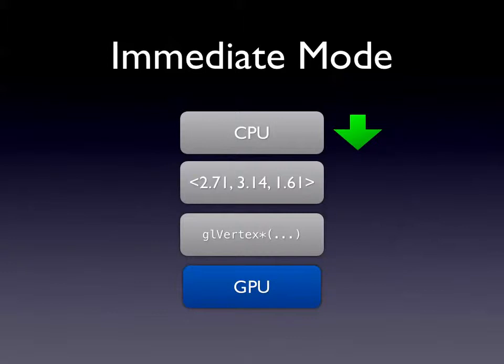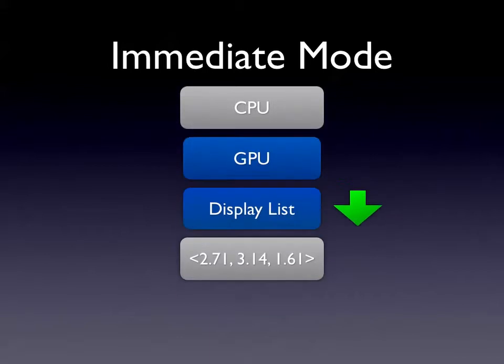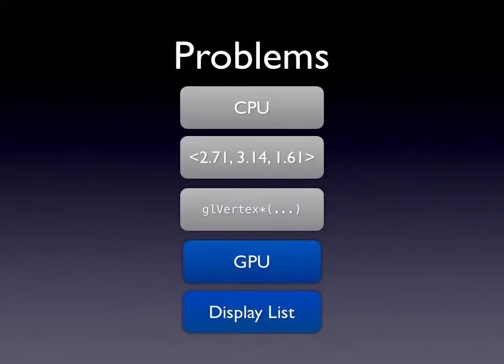What immediate mode basically means is that you're calling each vertex individually on your CPU and then all of these are immediately shipped off to the GPU. The GL Vertex family of functions — GL Vertex 2F, 3D, 3F — is a collection of functions which basically just puts a vertex or a point to the GPU. That's called between GL begin and GL end. In immediate mode, every time you transfer information from CPU to GPU, you've got this massive overhead — this bottleneck.